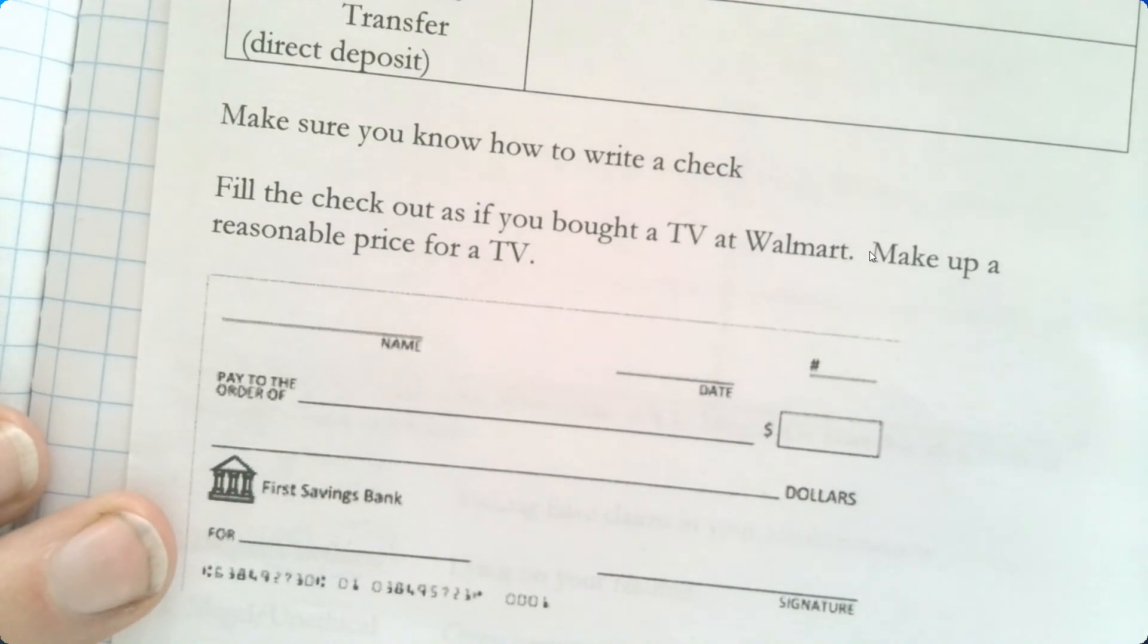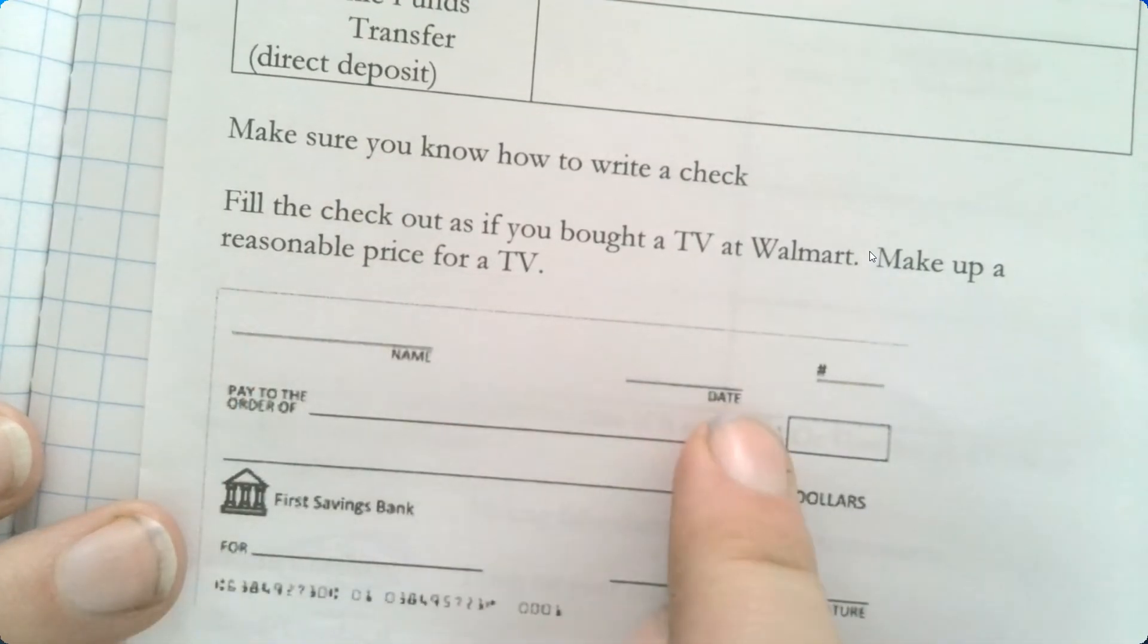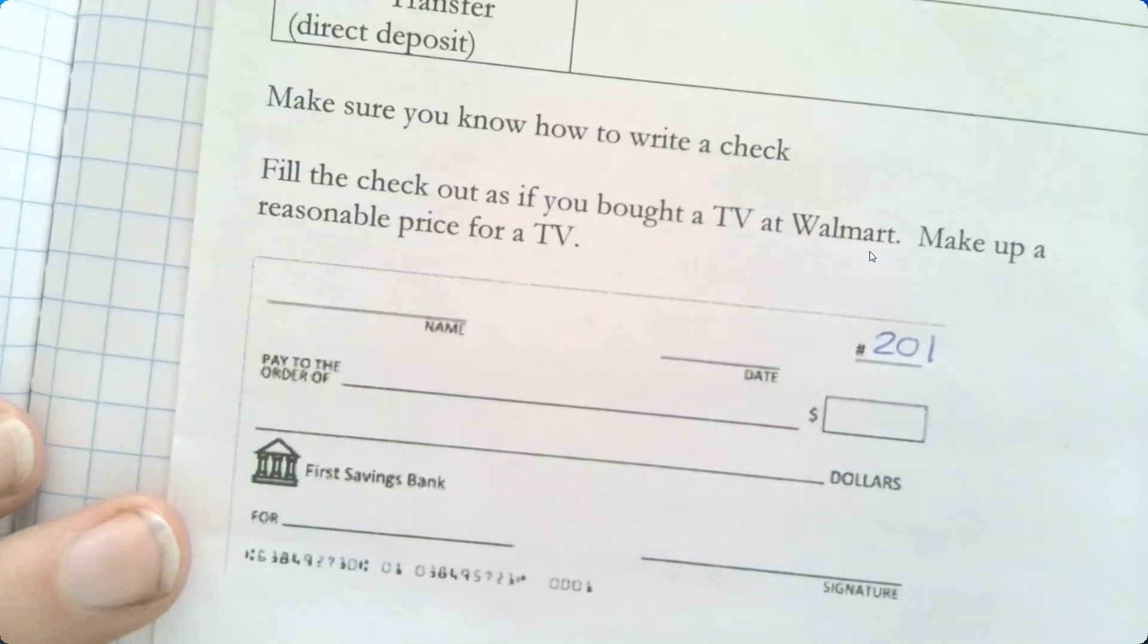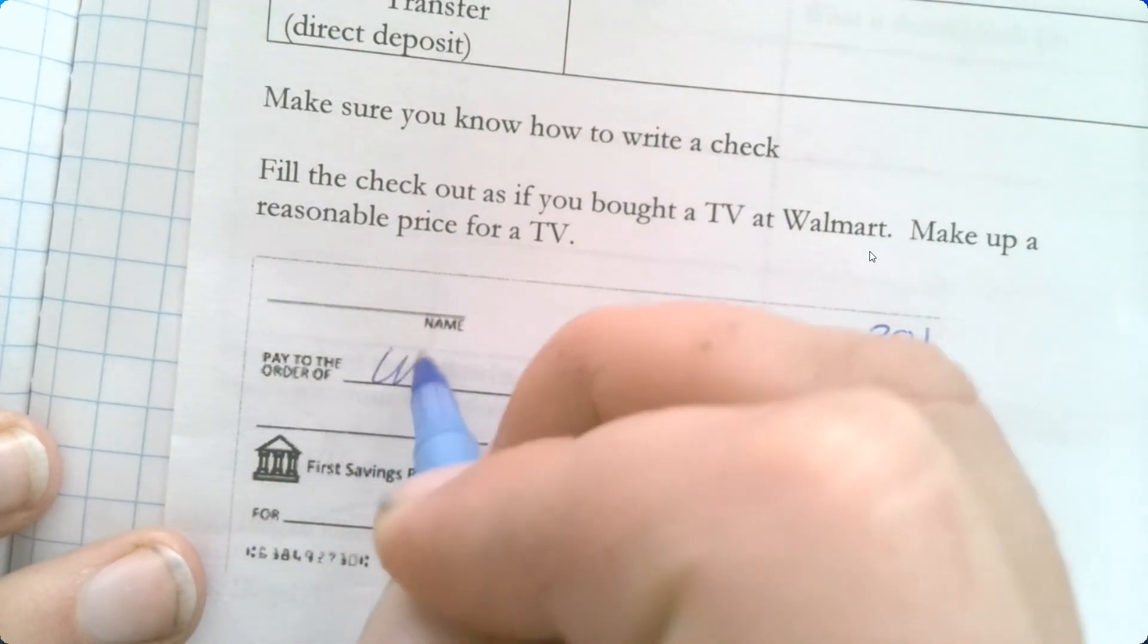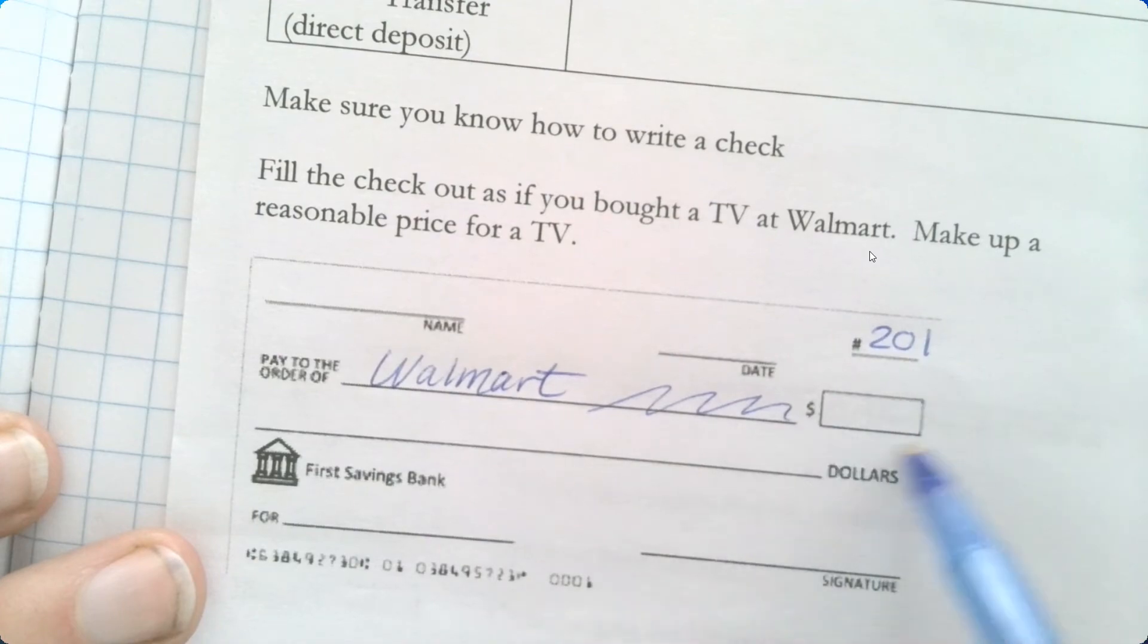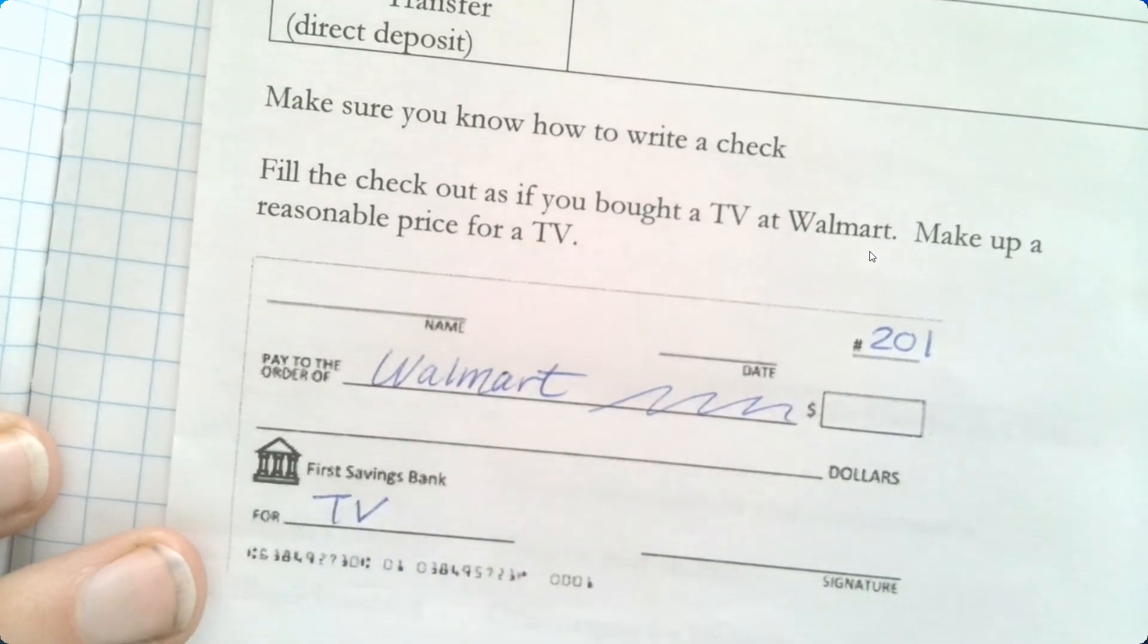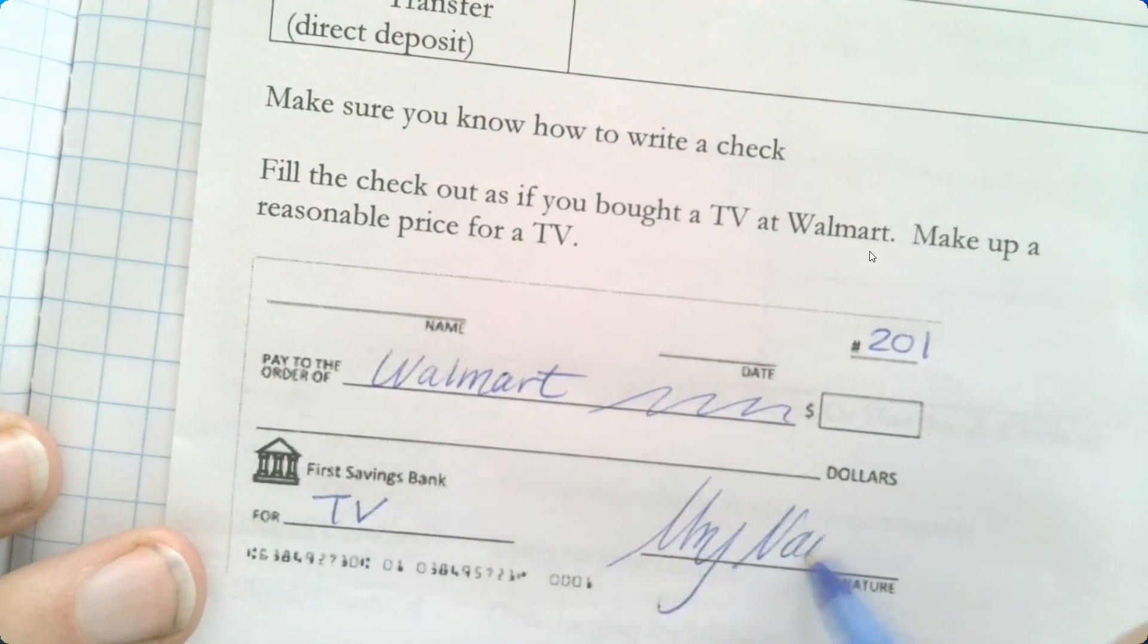Hold on, the check. Guys, do you guys know how to write a check? It says fill out the check as if you bought a TV from Walmart. Make up a reasonable price. What's a reasonable price for your TV? A dollar? Two million? Okay, what goes here? My name. What goes here? Okay, can we just say that this is check 201? Who are we gonna pay it to? Good. I am purposely not gonna give you the amount here. You need to write it out in dollars and words here. What are we buying? And then I'm okay with you doing my name instead of a real signature.